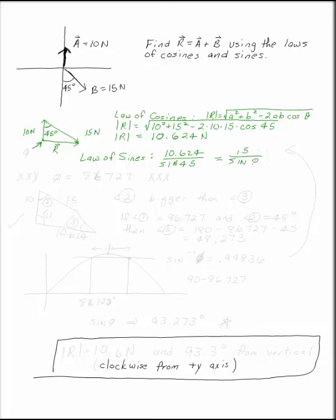So in this case, if we call this angle phi, we can find out what phi is. If you plug this into your calculator, you get phi is 86.727,